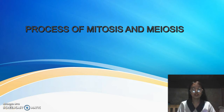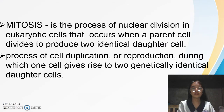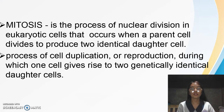The Process of Mitosis and Meiosis. Mitosis is the process of nuclear division in body cells, where a cell divides to produce two identical daughter cells. The process of cell duplication or reproduction during which one cell gives rise to two genetically identical daughter cells.